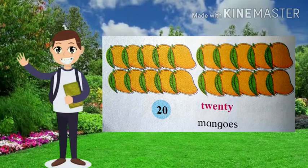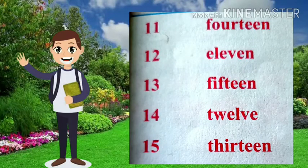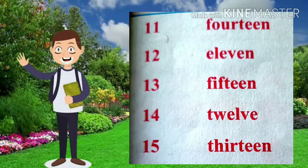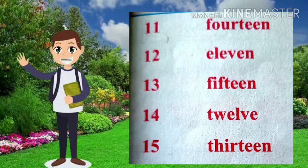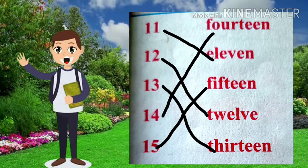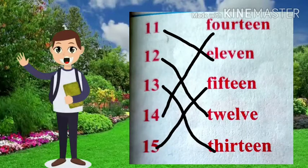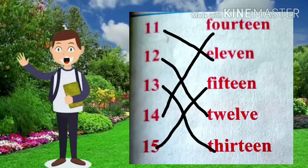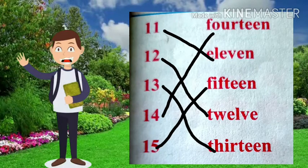Numbers 11 to 20. We have seen numbers 11 to 20 and their spellings. Listen and match the number with the word, 11 to 20. 11 spelling E-L-E-V-E-N. 12. 13. T-H-I-R-T-E-E-N. 13. 14. F-O-U-R-T-E-E-N. 15.